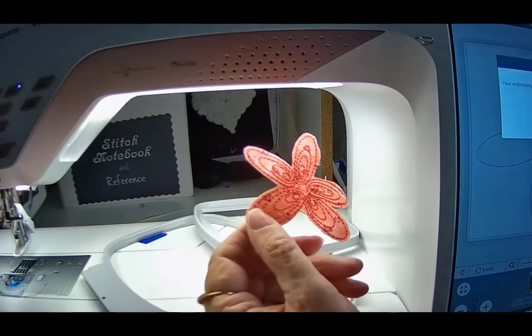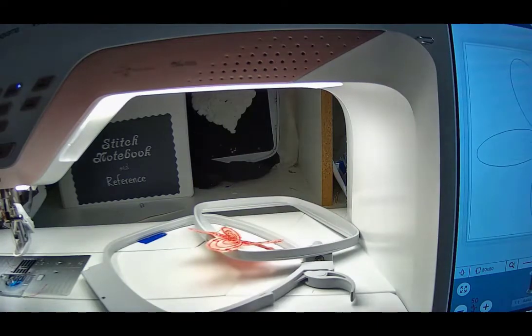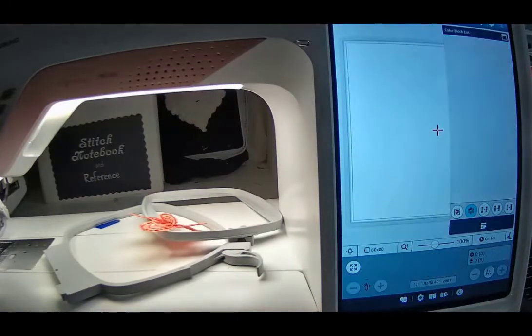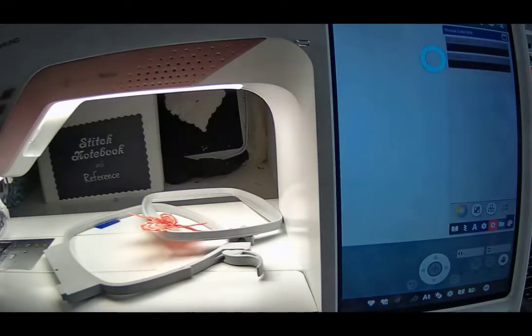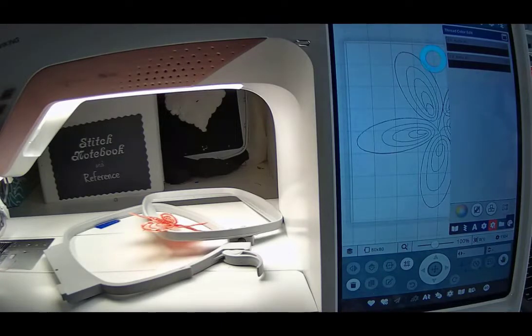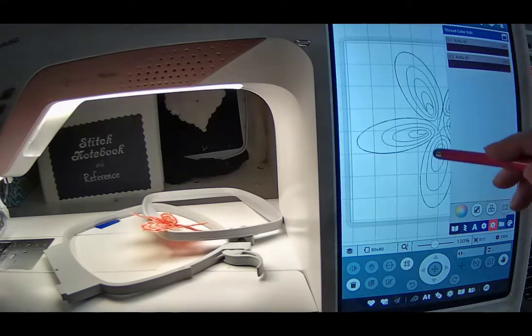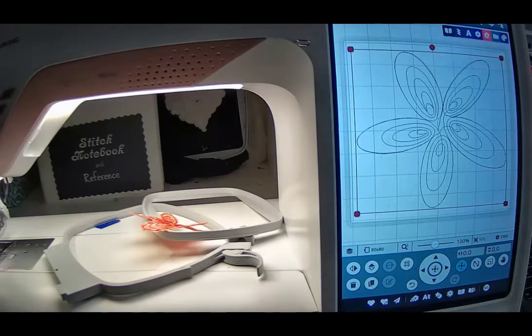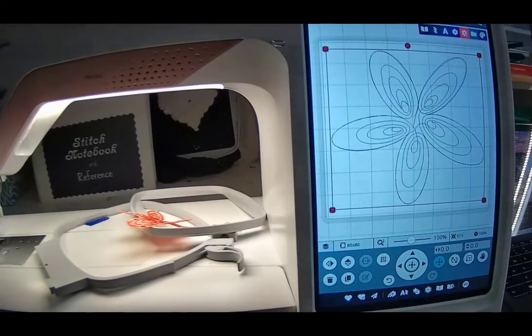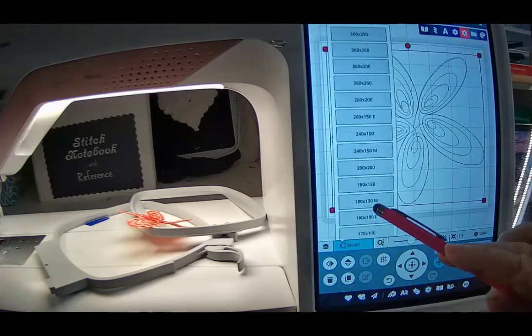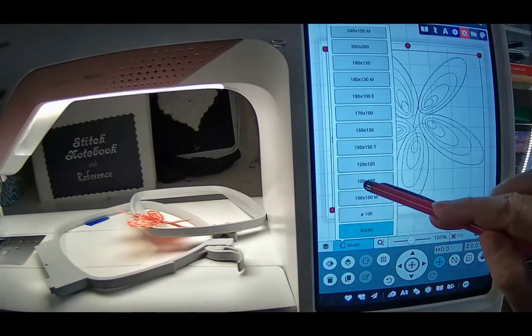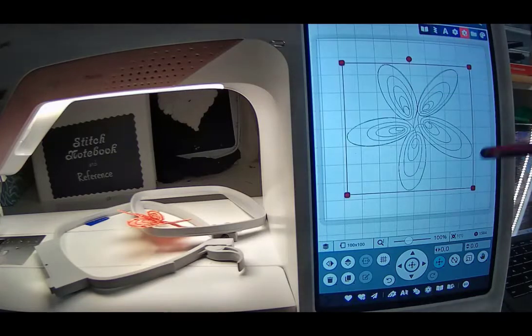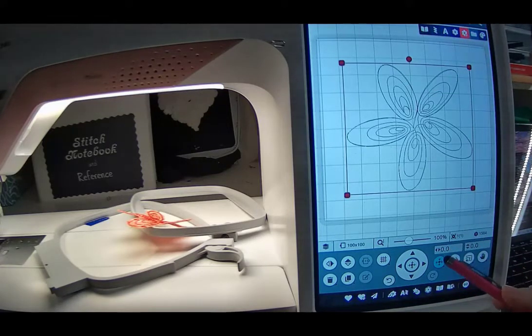What I need to do now is I'm actually going to go out of my design here. I'm going to get rid of it. And I'm going to keep this design, but what I'm going to do is I'm going to make it just a little bit larger because I want it to kind of show a little bit differently on the back. So I'm actually going to go to a 100x100 hoop instead. I'm just going to leave it at the 100x100 hoop. I'm just using my standard hoop. And I want to make this just a little bit larger.